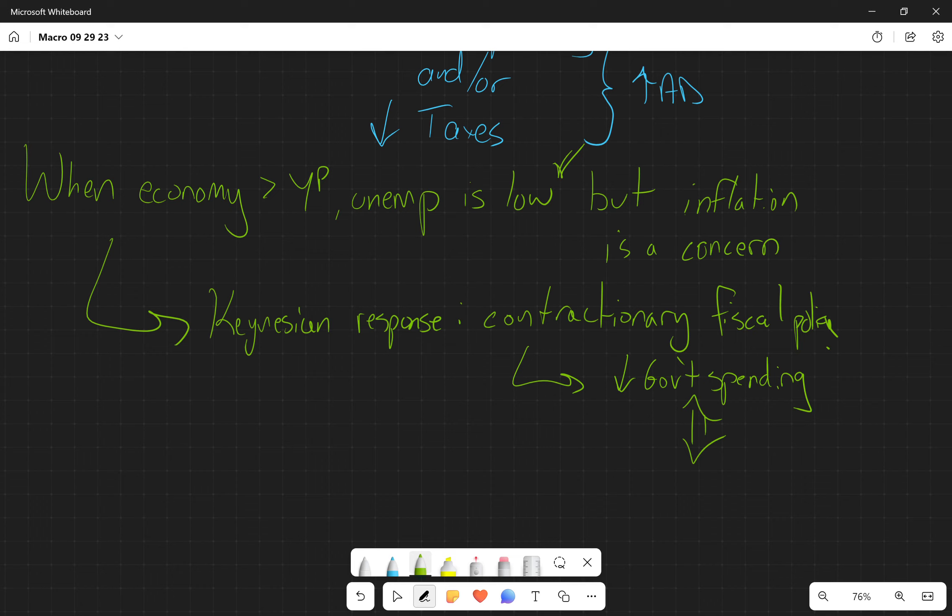And so we've got a whole arm of the political party that are ideologically opposed to this theoretical response—decreasing government spending or increasing taxes.